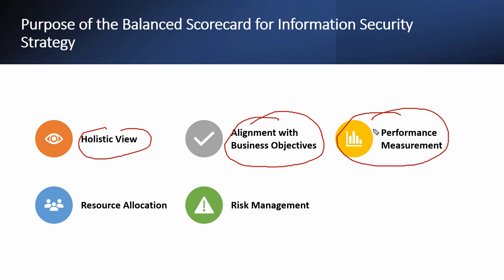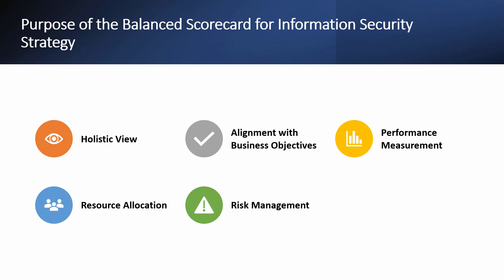Third is performance measurement. If we have an incident management process, how effective is it? We introduce KPIs — for example, number of incidents closed, number of incidents managed, and mean time to detect an incident. By having this process and its associated metrics, we can track how it's creating value. The scorecard allows measurement of performance against predefined objectives, helping identify areas for improvement. With the Balanced Scorecard, we also get visibility into resource allocation — understanding which areas are performing well and which need improvement so resources can be allocated more effectively. Last, it also helps in understanding and managing risk from various perspectives to ensure a well-rounded risk management approach.